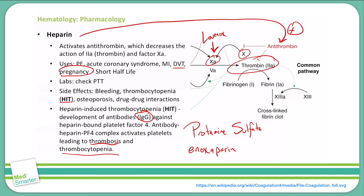Because low molecular weight heparins undergo renal clearance, we need to pay attention in patients who have a renal problem — they are contraindicated in renal insufficiency. A further problem with low molecular weight heparins is that they are not easily reversible, so if a patient has upcoming surgery or has experienced trauma, low molecular weight heparins like enoxaparin are contraindicated.